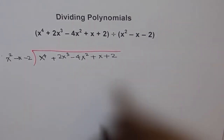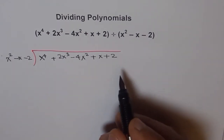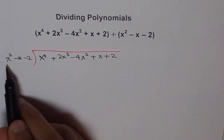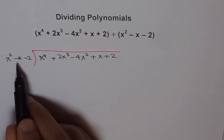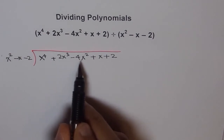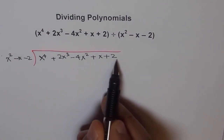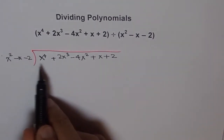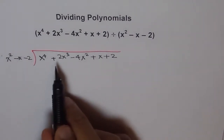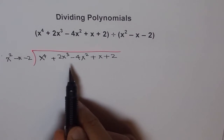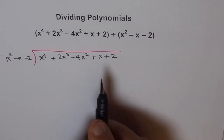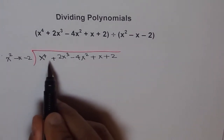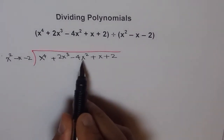Now let us start division. First, we check that all terms are in order — nothing is missing. X to the power of 4, 3, 2, 1, 0 in the dividend, and 2, 1, 0 in the divisor. So nothing is missing; we do not have to add any zeros in between. Here we are taking 3 terms: 1, 2, 3.